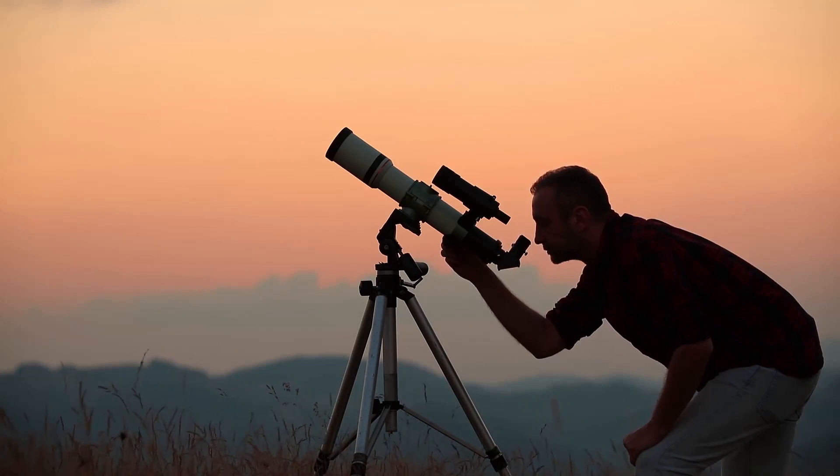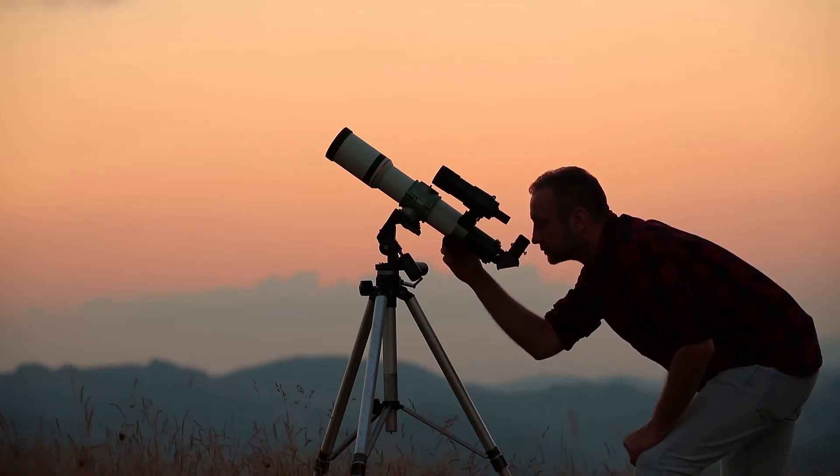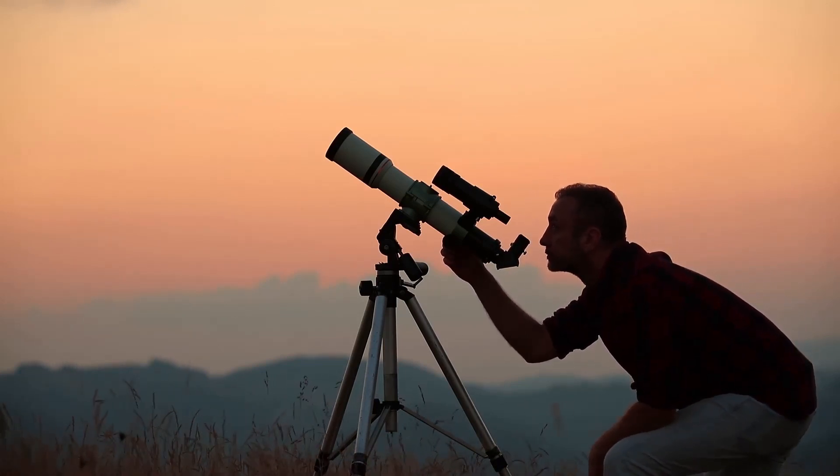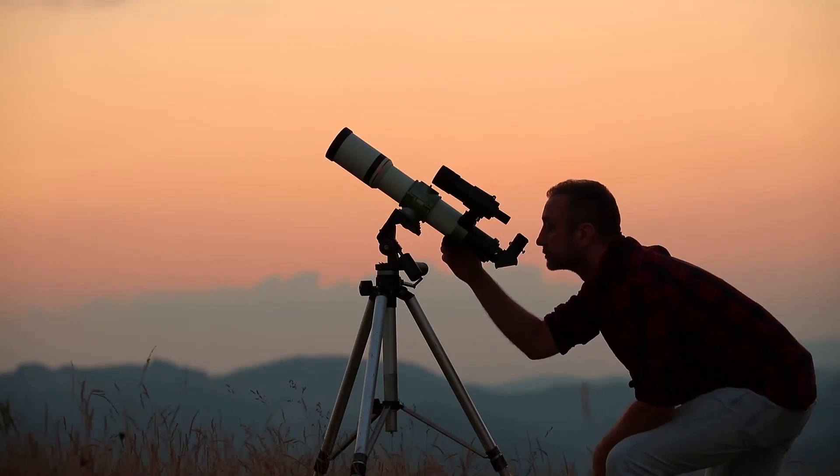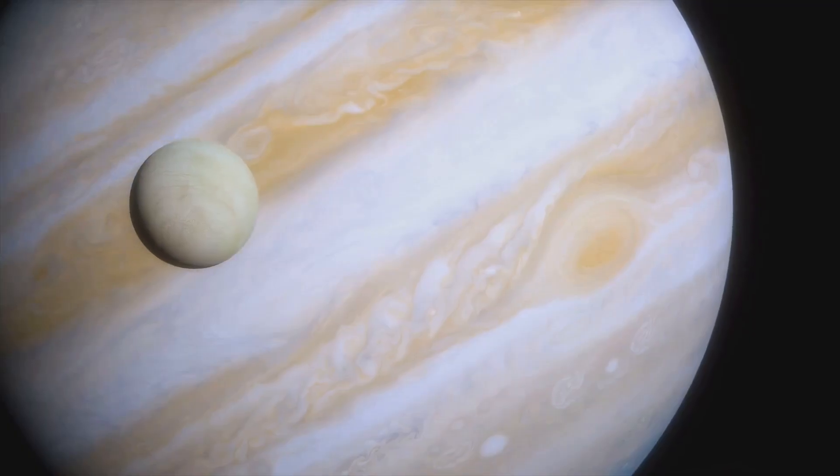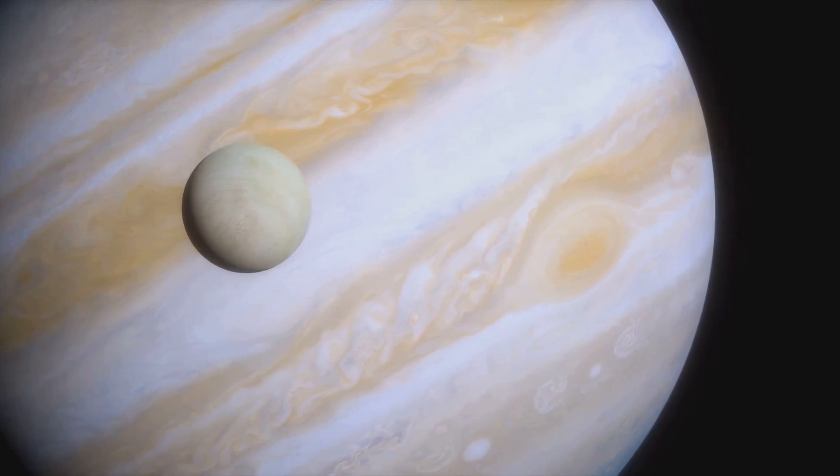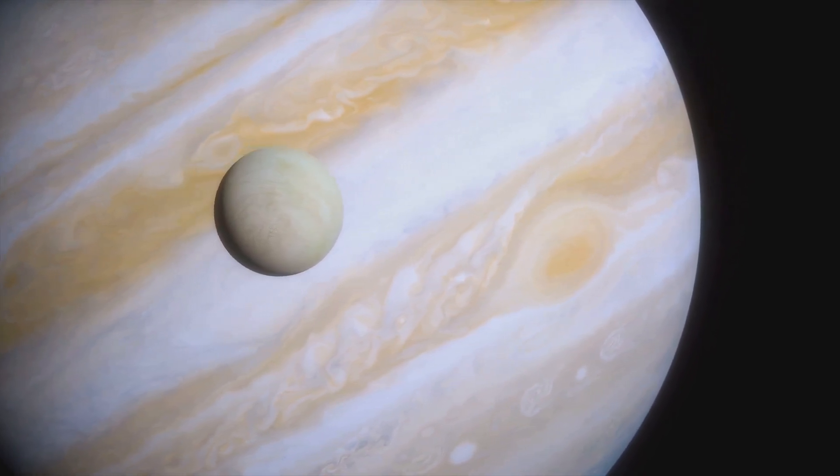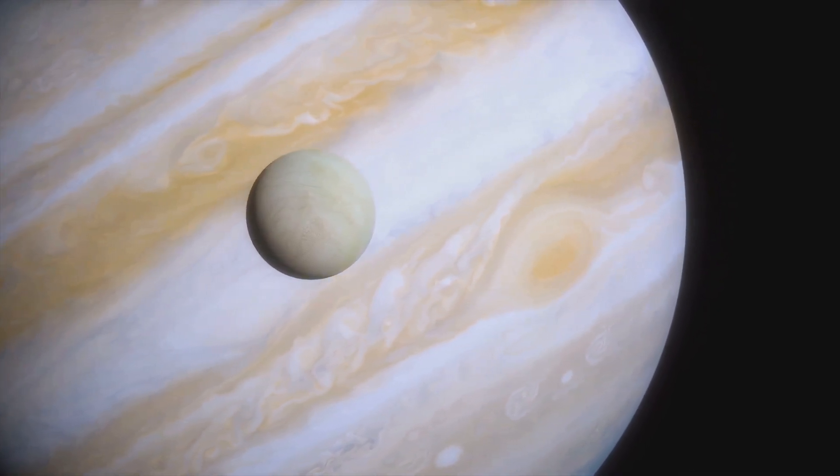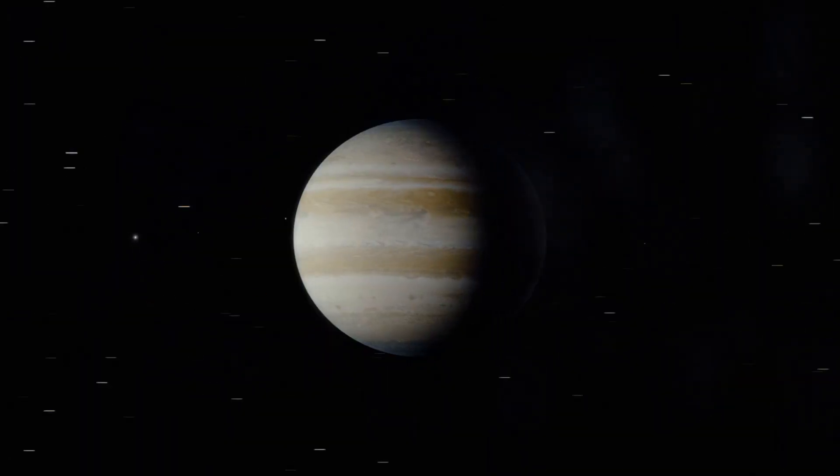With this improved instrument, Galileo turned his gaze to the night sky and made a discovery that would forever change our understanding of the universe. In the year 1610, he observed four celestial objects orbiting Jupiter. These were later named the Galilean moons in his honor: Io, Europa, Ganymede, and Callisto.